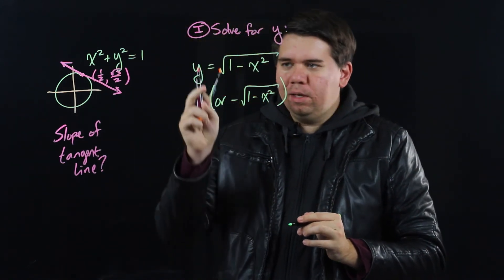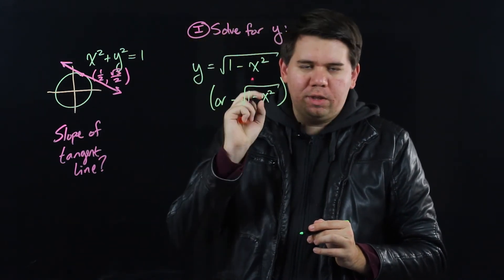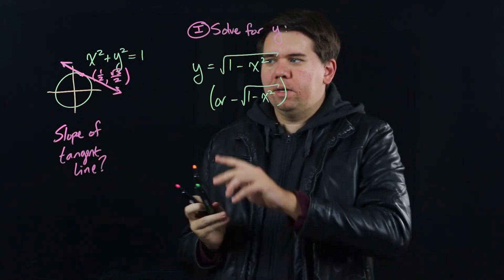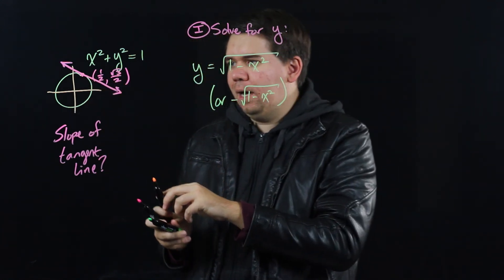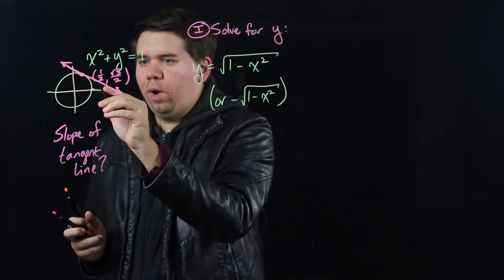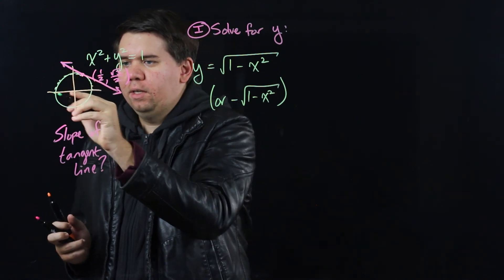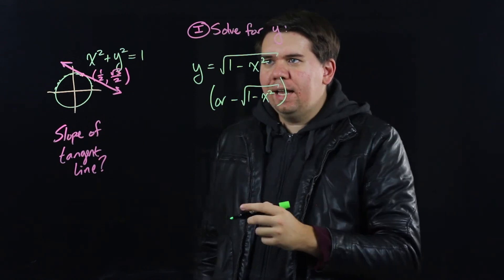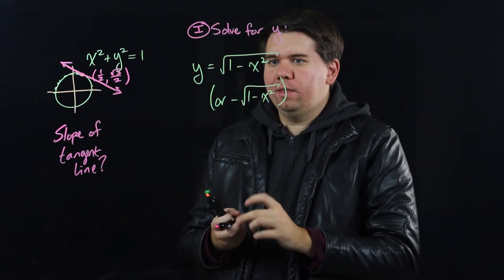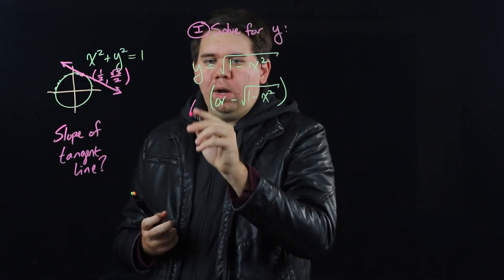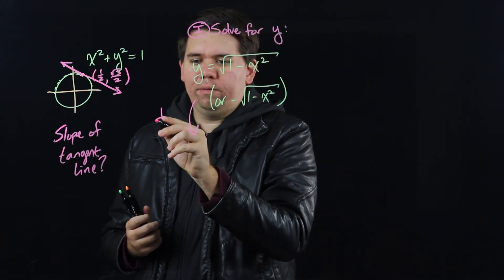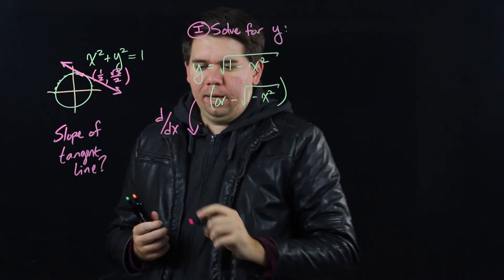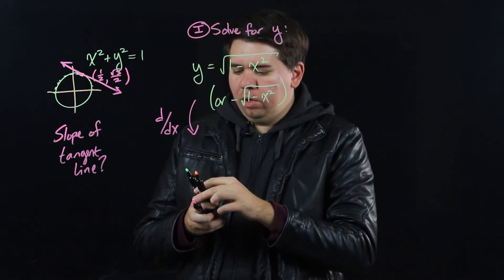When you have y squared equals something, y could either be the square root or the negative square root. But since we're focused on a point on top right now, we're really worried about when your y value is positive. So now we can go ahead and we can find the derivative. So now that you solve for y you can calculate your derivative.